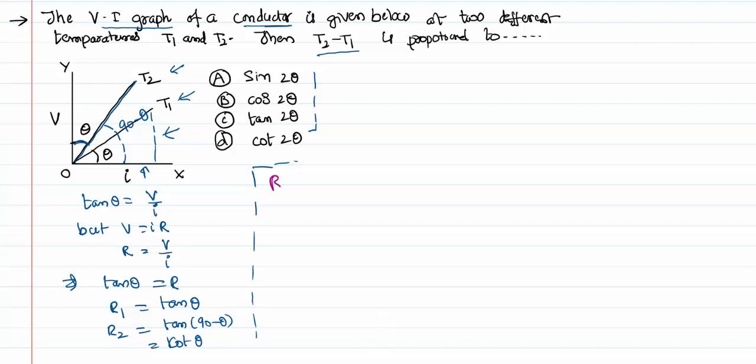Being it is a conductor, resistance is directly proportional to temperature. So R1 is directly proportional to T1, R2 is directly proportional to T2. That implies T2 minus T1 is directly proportional to R2 minus R1.